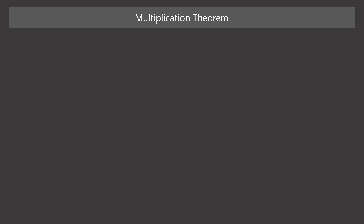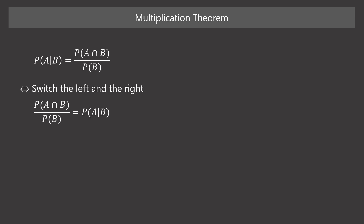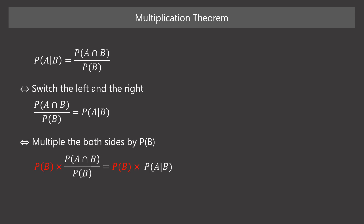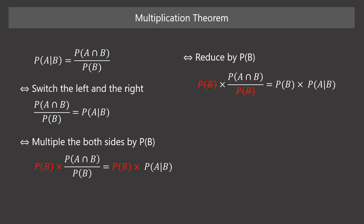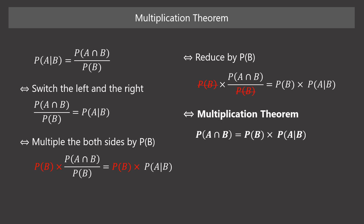Before diving into Bayes' theorem, we need to understand the multiplication theorem. You already know that the conditional probability of A given B can be represented in this way. Now, let's switch the left side and the right side. Next, multiply both sides of the equation by B's probability. We can reduce this fraction by B's probability. Then we get this equation. The rule represented by this equation is known as the multiplication theorem.